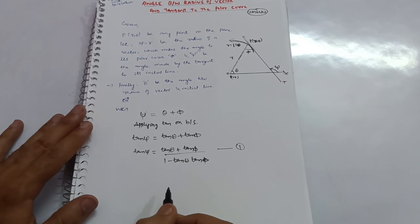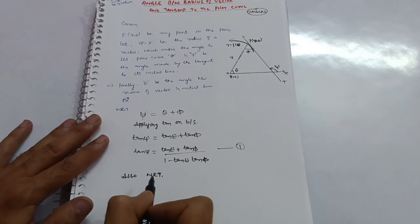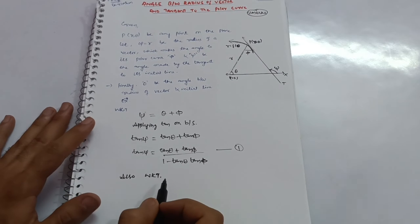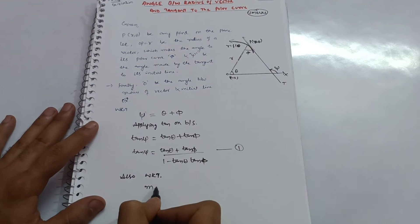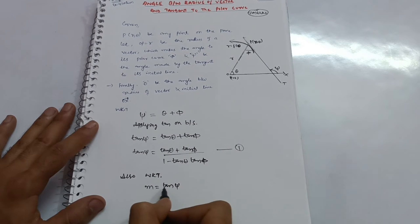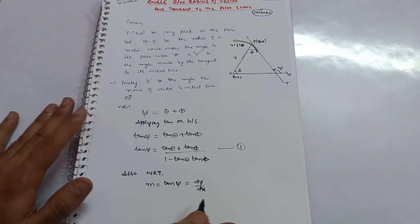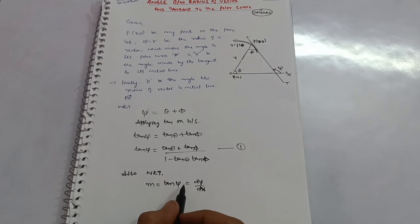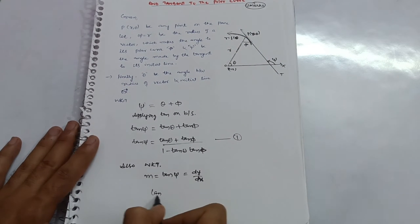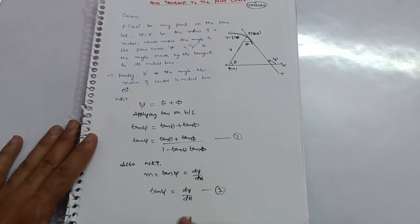We know that the slope m = tan ψ = dy/dx. So we can write tan ψ = dy/dx. This is the second equation. Many students don't know this next step, so remember: slope equals dy/dx, and that equals tan ψ.